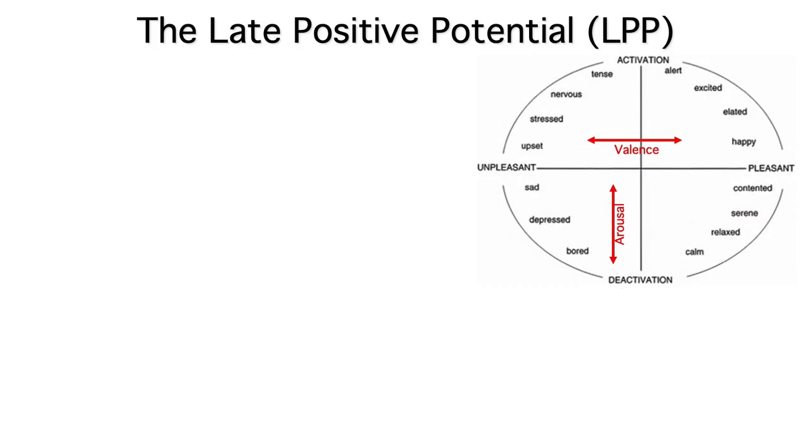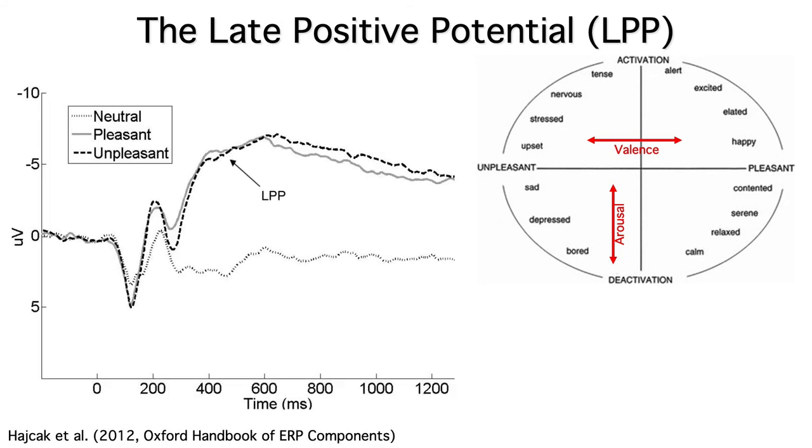As you probably know, emotion has two main dimensions, arousal and valence. Arousal is the intensity of the emotional response, and valence is whether it's positive or negative. The LPP primarily reflects arousal and not valence.